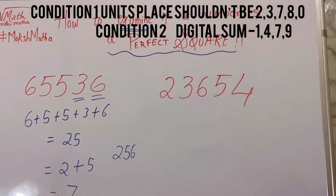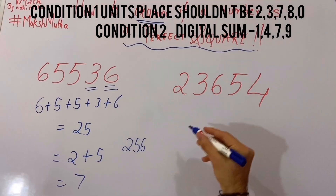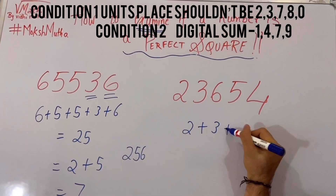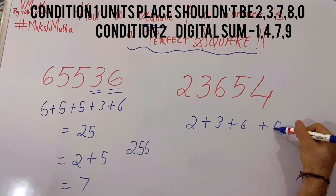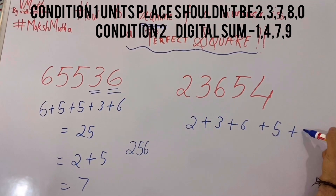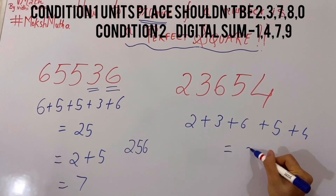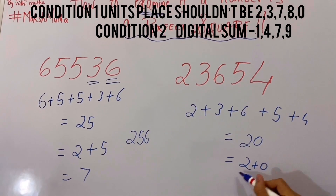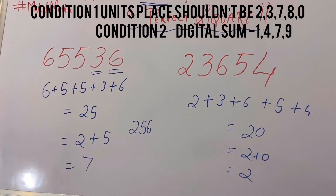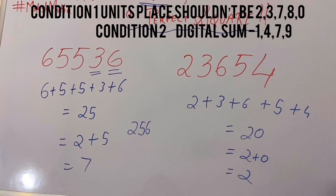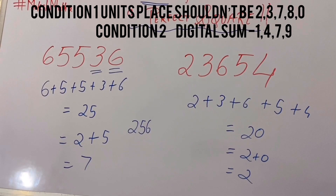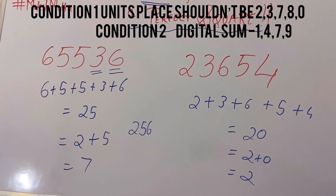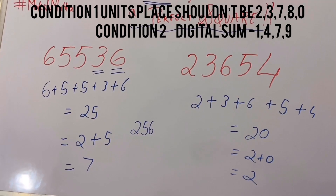Now the next number is 23654. 2 plus 3 plus 6 plus 5 plus 4, which is equal to 20, which is equal to 2 plus 0, and which is again equal to 2. It means that it is not a perfect square number because the digital sum is 2 and it should always be 1, 4, 7, or 9.